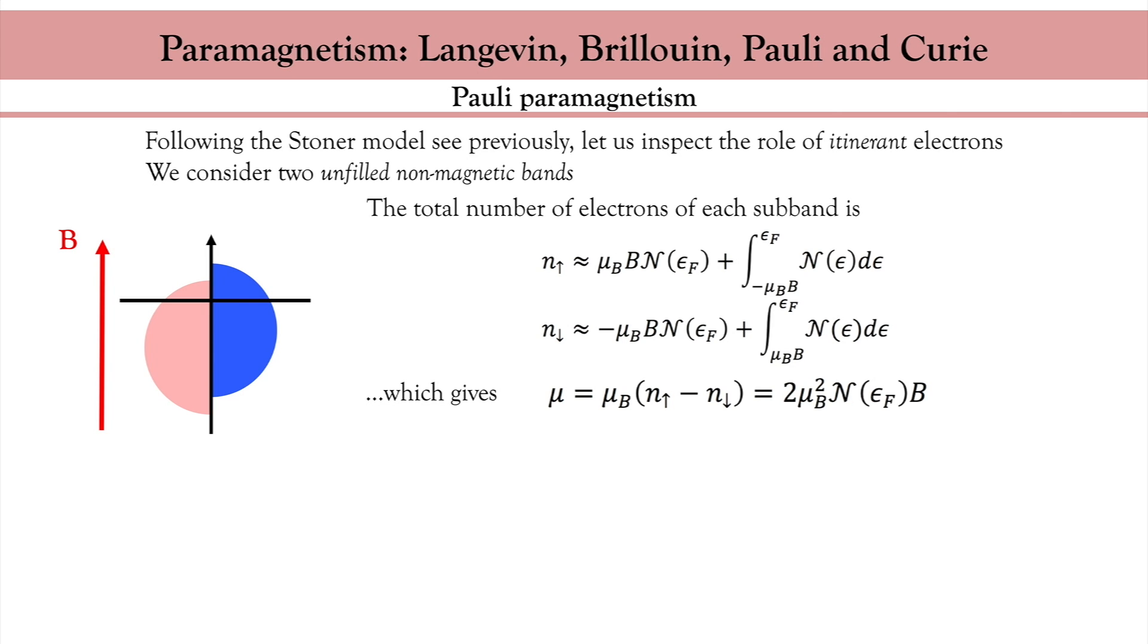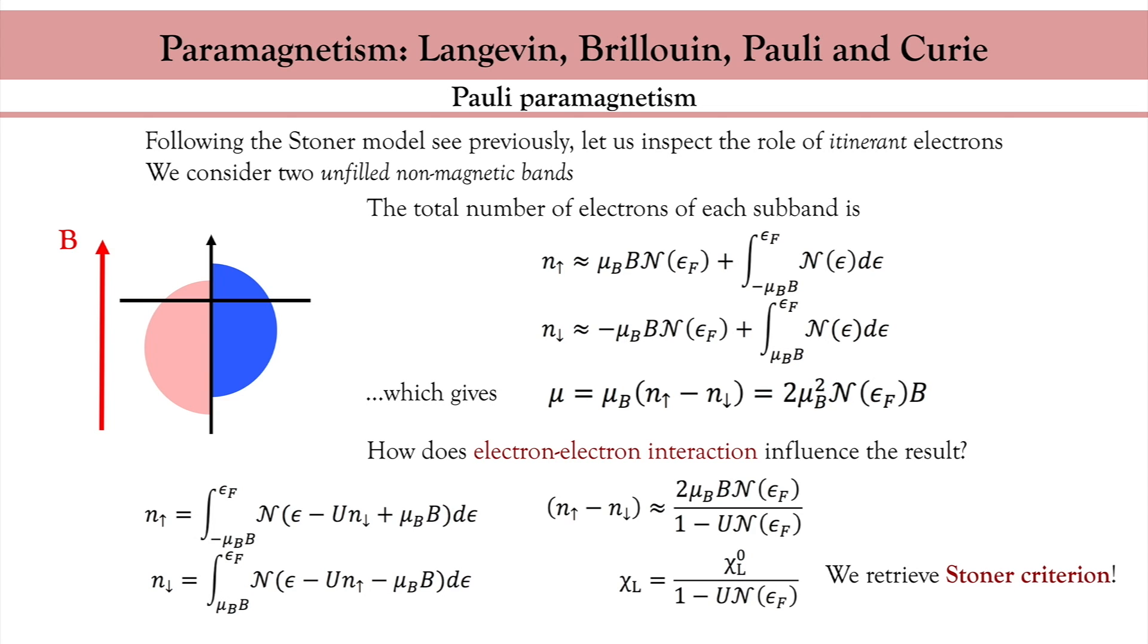What happens if I turn on the electron-electron interactions? In this case, the energy of each population of spins depends on the density of the other population. I obtain something like that. By expanding these densities and taking the difference, I obtain this expression which gives me the renormalized magnetic moment. This renormalization factor is proportional to the electron-electron interaction and is nothing but a reminiscence of the Stoner model that we saw in lecture 2. This expression states that if the electron-electron interaction is large enough, the paramagnetic susceptibility diverges, which leads to a spontaneous symmetry breaking and the emergence of ferromagnetism.